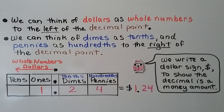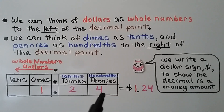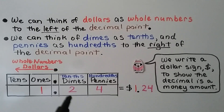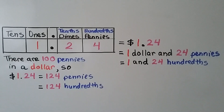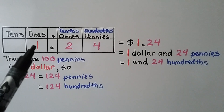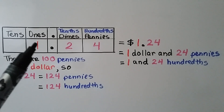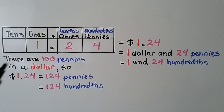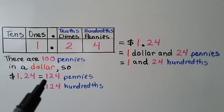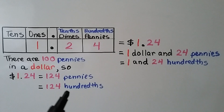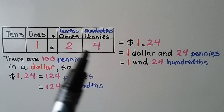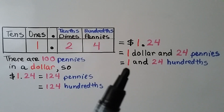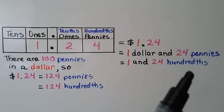We write a dollar sign to show the decimal is a money amount. We have one dollar and 24 cents — two dimes and four pennies make the 24 cents. With a one in the ones place, that means there are 100 pennies, and there are 100 pennies in a dollar. So $1.24 is equal to 124 pennies, or 124 hundredths — it's one and 24 hundredths.